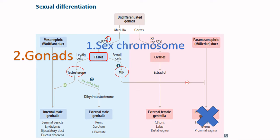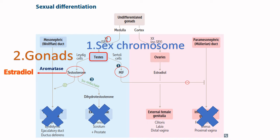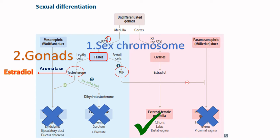Because they have testes, they will also have Leydig cells that produce testosterone. However, in utero this testosterone should lead to male genital development, but because there is insensitivity — it's called androgen insensitivity — the tissues are not responsive to testosterone. So this person will not develop external or internal male genitalia. All this testosterone gets aromatized to estrogen peripherally, and this estrogen causes normal breast development and external female genital development. However, because there is also no response to androgens in general, this person will not have axillary or pubic hair.